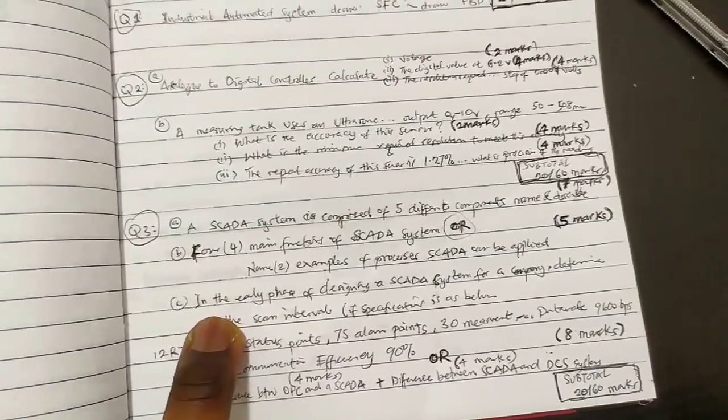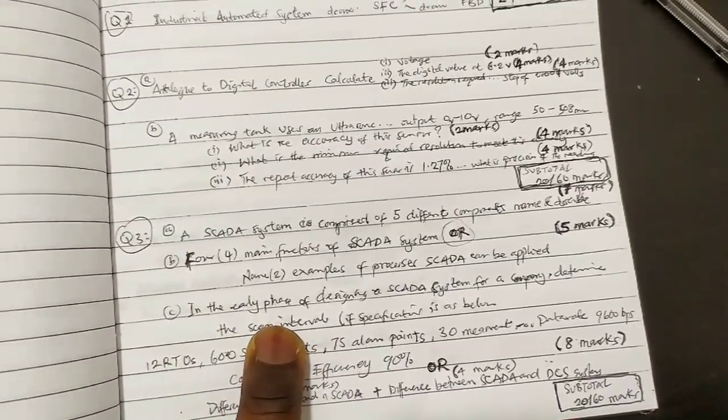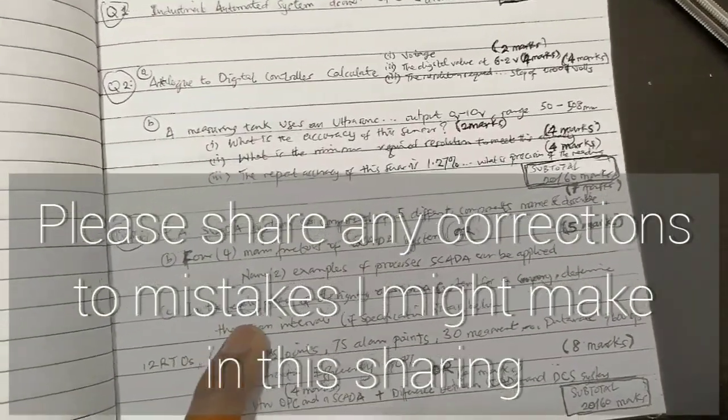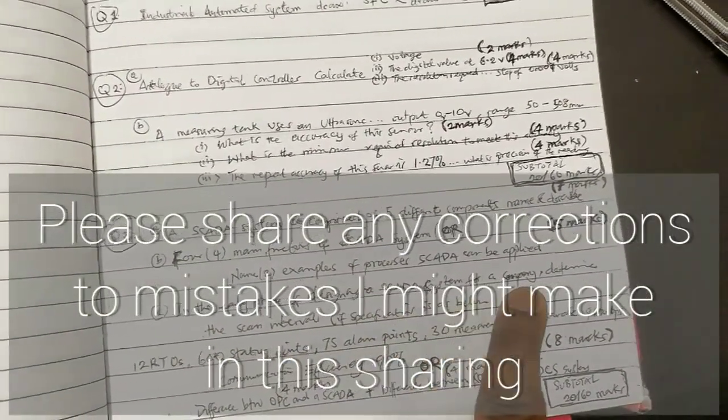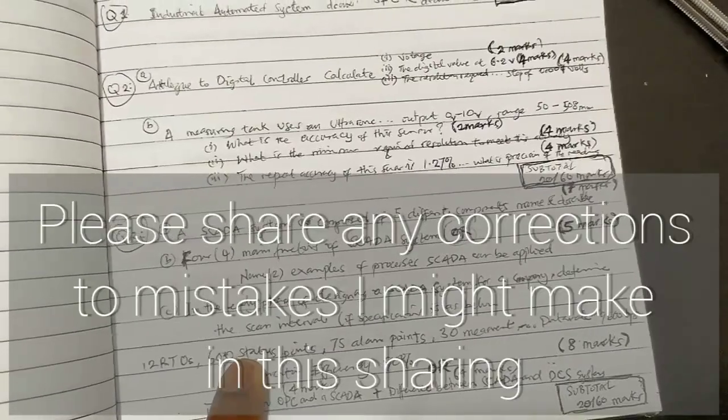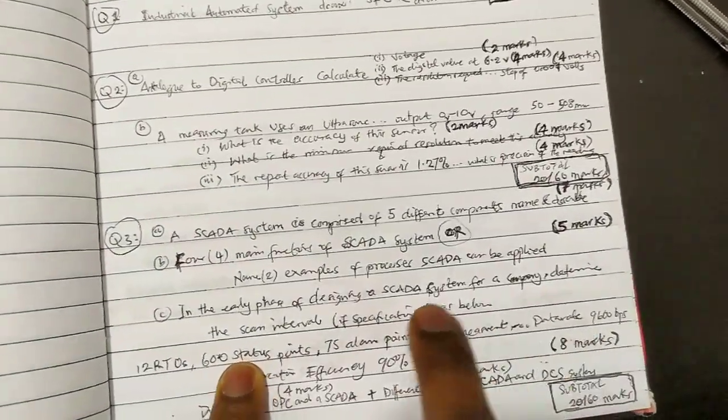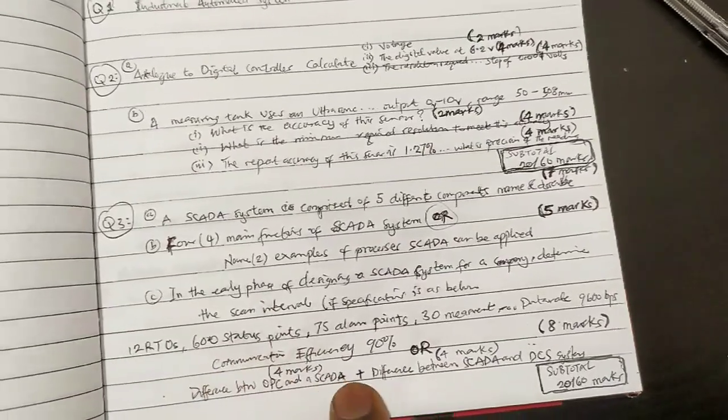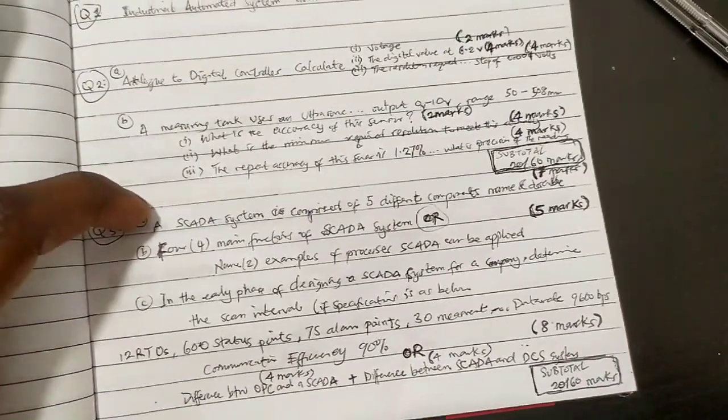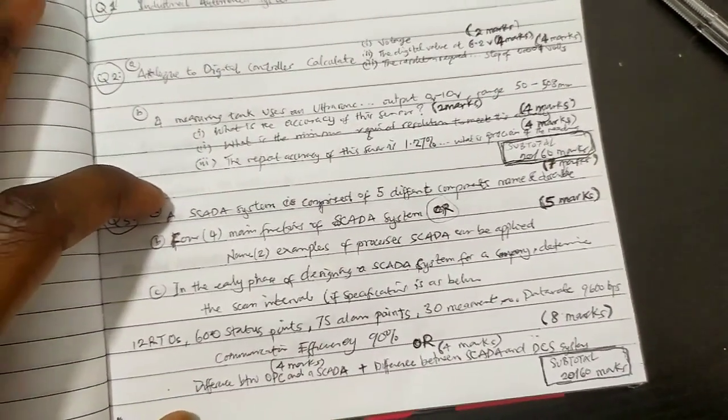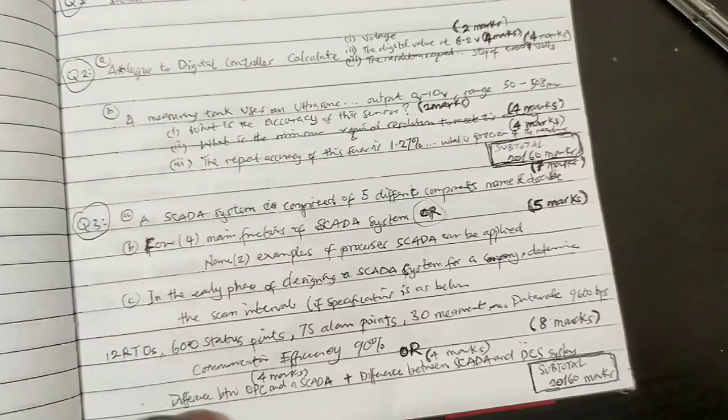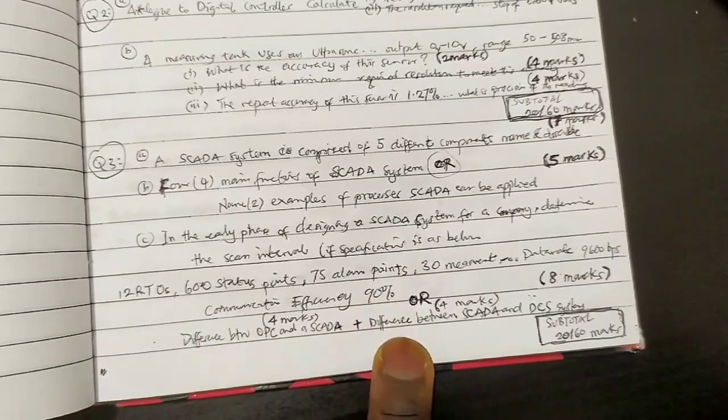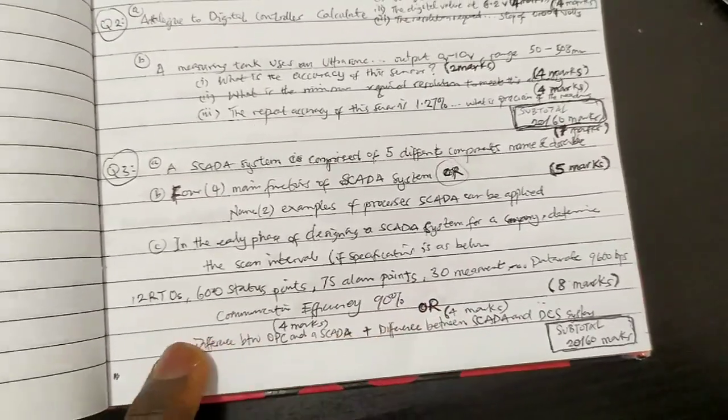Yesterday he said the questions will have equal marks, so this might be different. In the early phase of design of a SCADA system, a company determines the scanning intervals. These are repeated questions around that topic based on past questions.